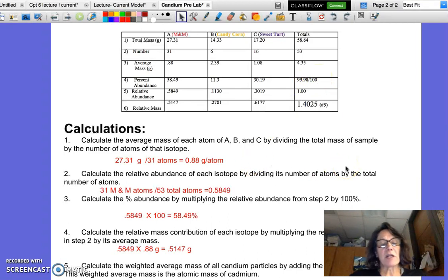Next, we're going to calculate the relative mass contribution of each isotope. So what we're going to do is say, of all of the atoms of M&Ms that I have, of all of one type of atom, taking into account the mass of each of those atoms, how much did this isotope contribute to the average mass of all three of these put together?